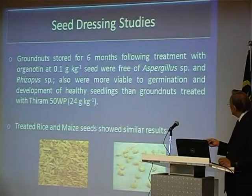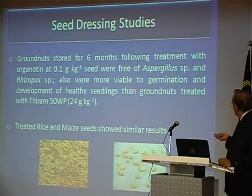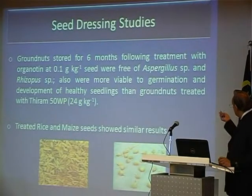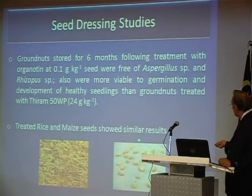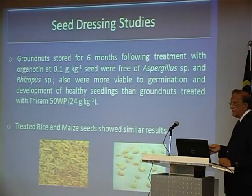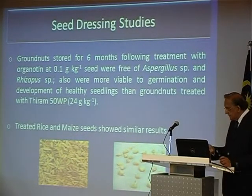We looked at seed dressing studies — groundnuts for six months, treated with organotin, they were viable for germination and developed healthy seedlings. Similarly, treated rice and maize seeds could be stored as seed dressing agents. The market is there.